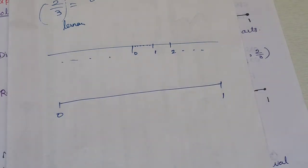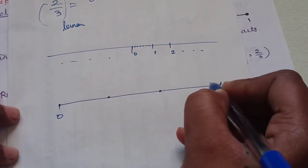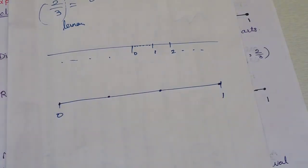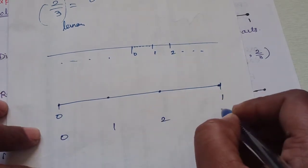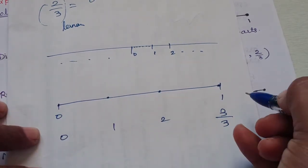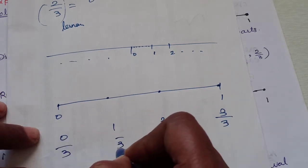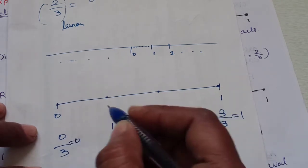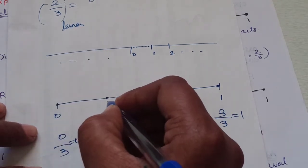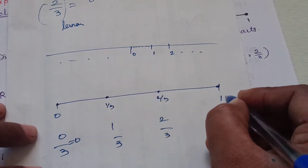We split the closed interval into three equal parts. There are four points: 0, 1/3, 2/3, and 1. We divide by 3, so 3/3 is 1 and 0/3 is 0. The points are 0, 1/3, 2/3, and 1, which is the same as 3/3.